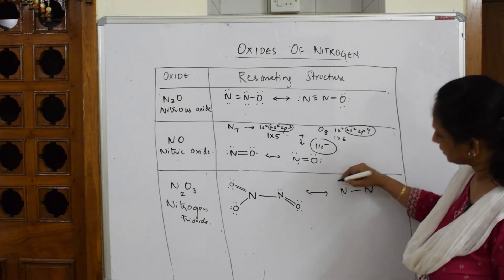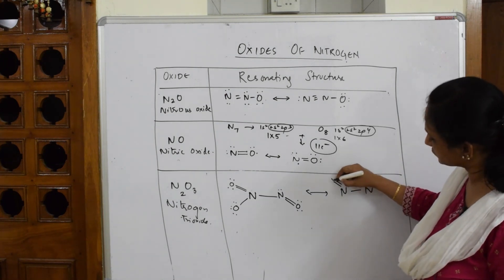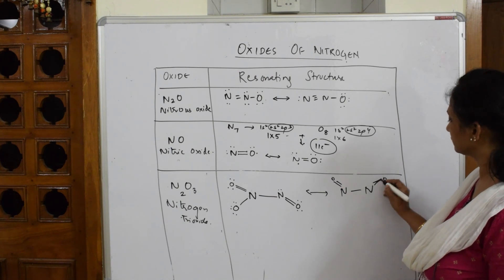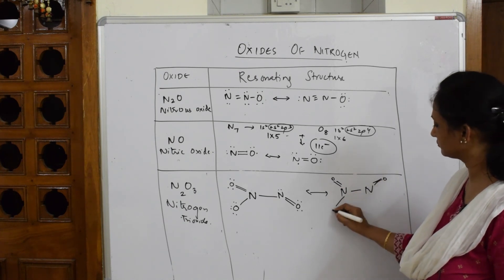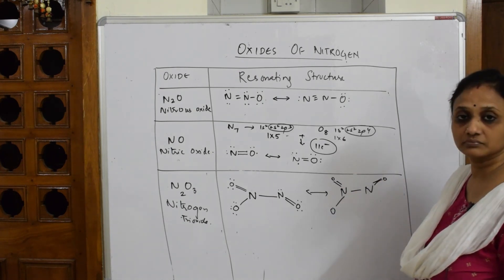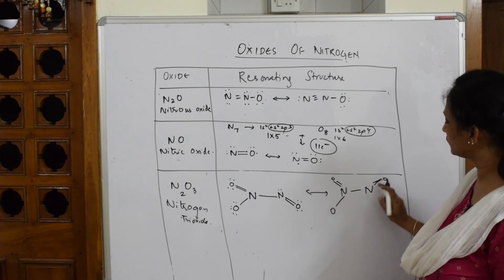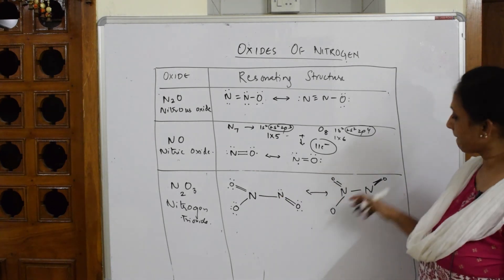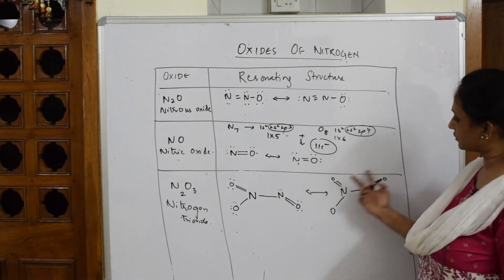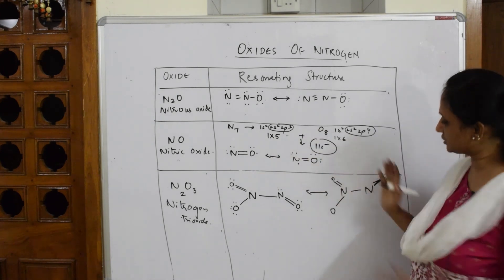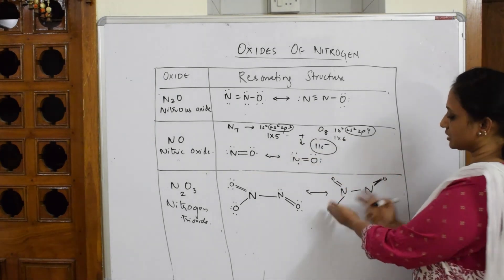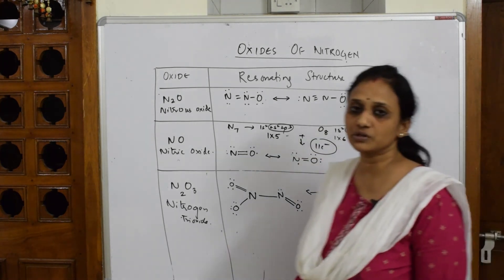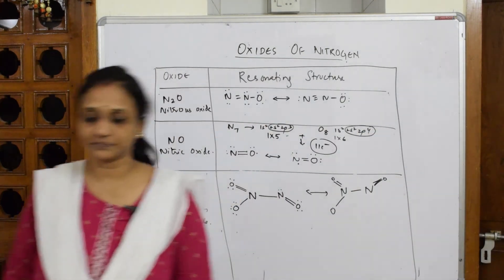For the resonating structure of N₂O₃, draw a double-sided arrow and rearrange: the two oxygens that were on opposite sides can be drawn adjacent to each other, with the third oxygen still in place. Fill in the Lewis dot electrons for all atoms in this resonance form — it's the same electron count, just written in the opposite orientation.